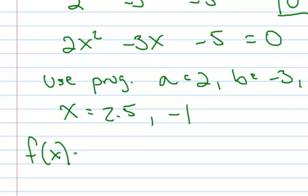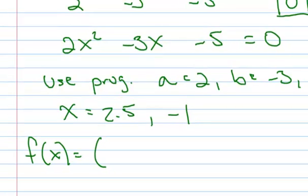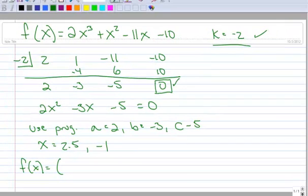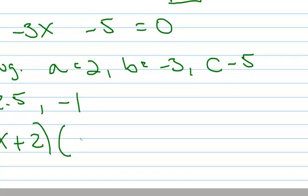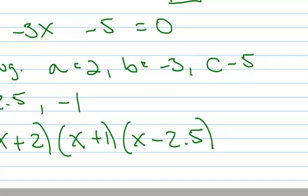So f of x equals — my first factor is x plus 2, my second factor is x plus 1, and the last one is x minus 2.5. This is a little unsettling because there's a decimal in there.